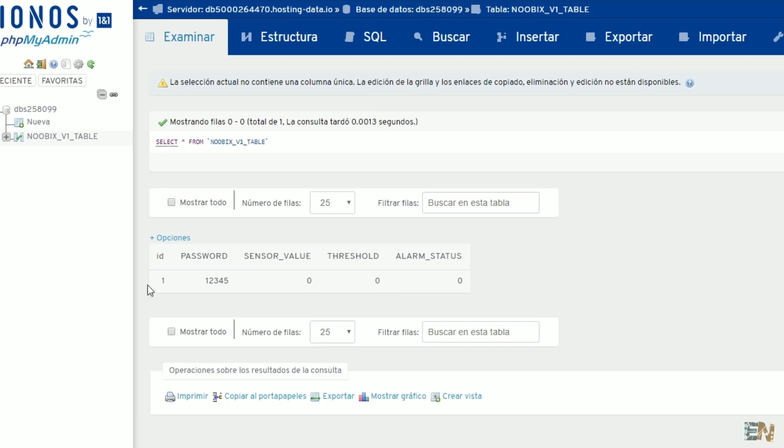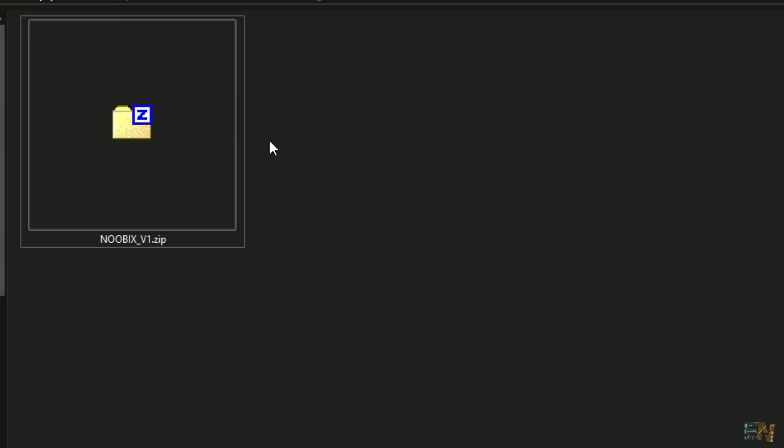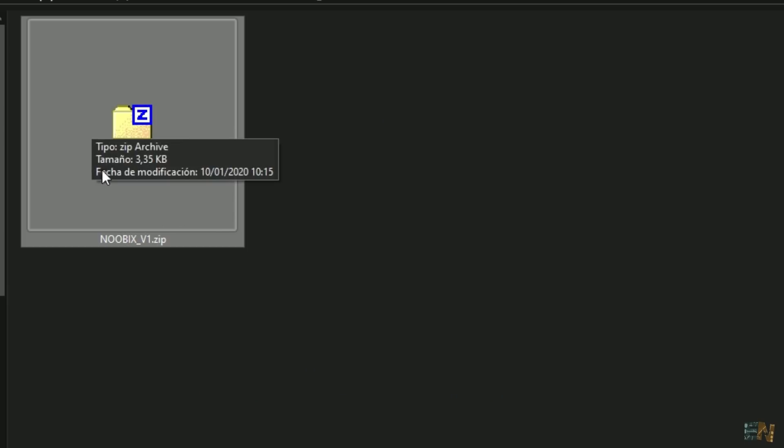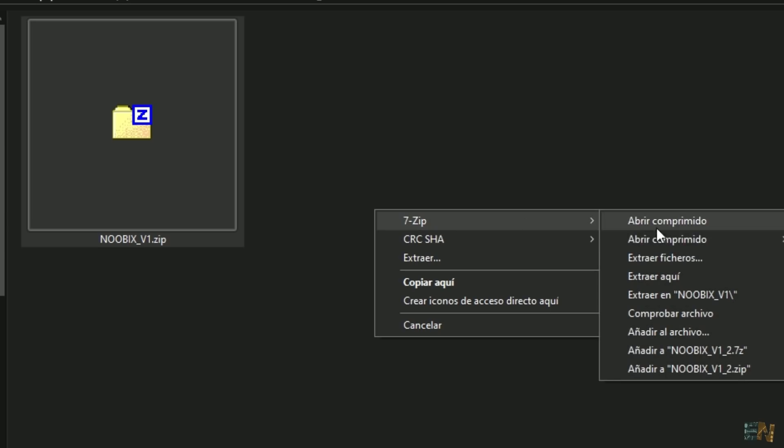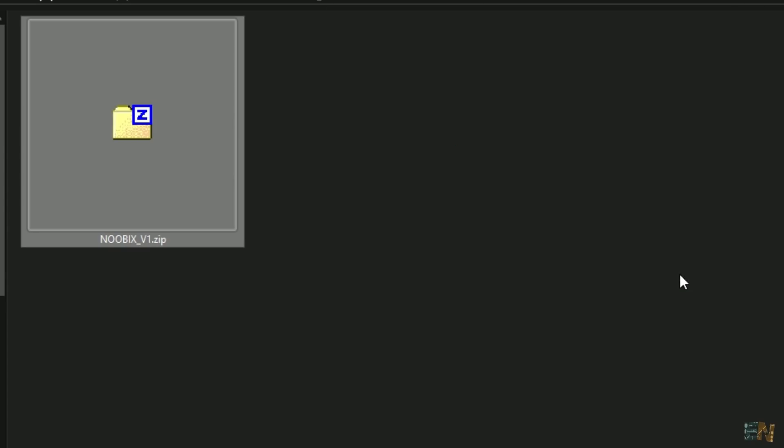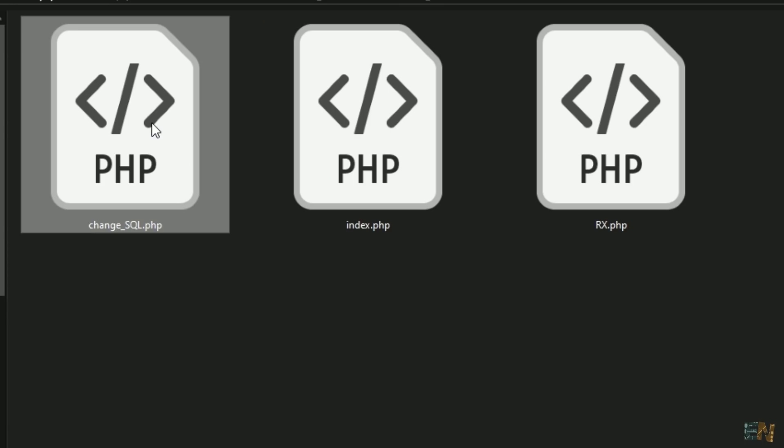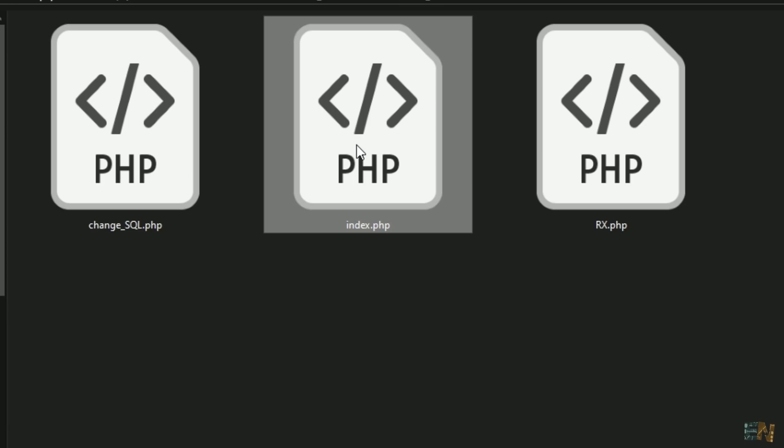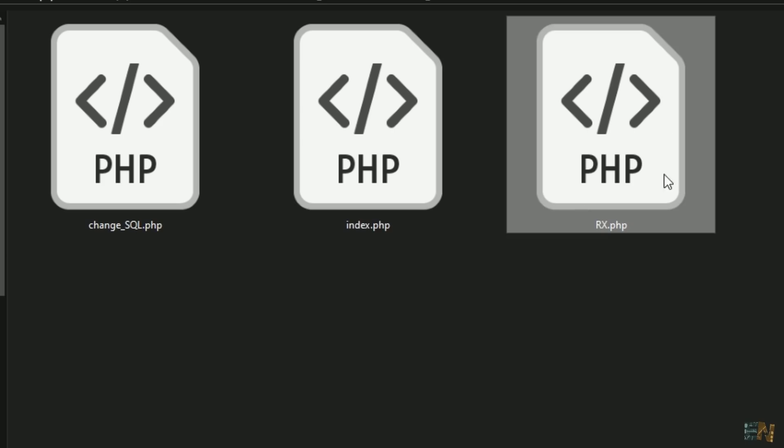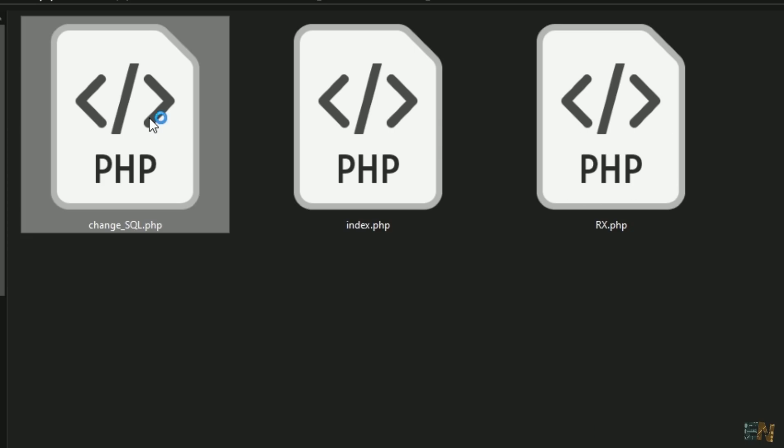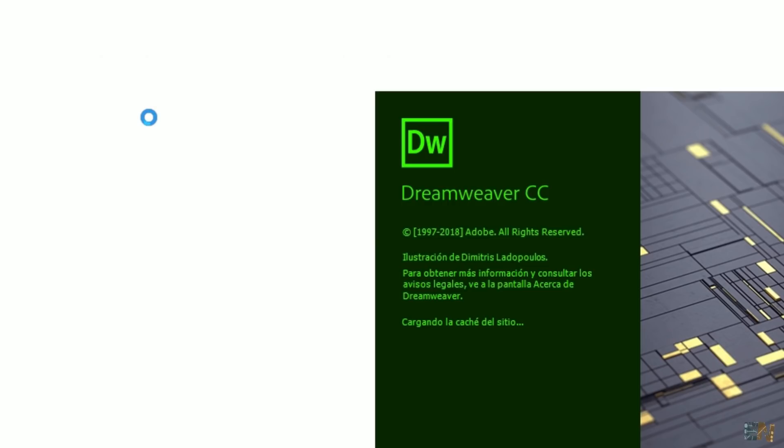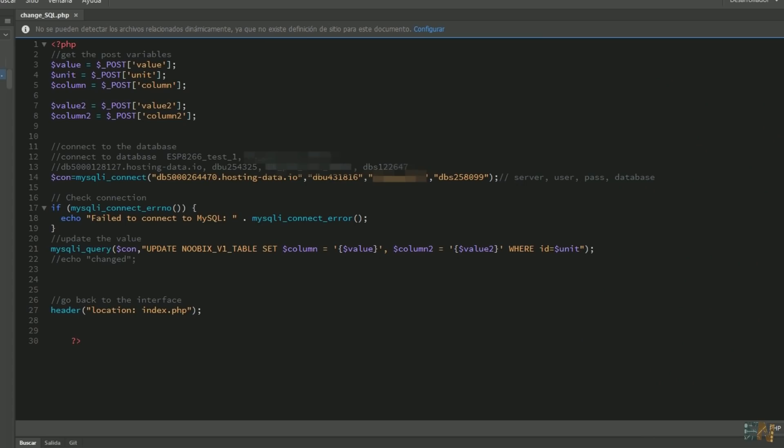Now go below the video and download the zip file with the PHP files. Extract that zip file and you will have a folder with the name Noobix V1. Inside this folder we have 3 files: change SQL, the index, and the RxPHP. Open the change SQL with any software you have for this. In my case I'm using Dreamweaver, but you could use any other free software.